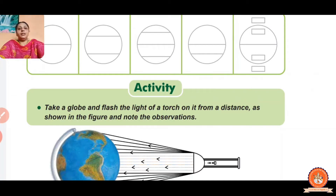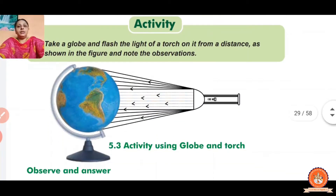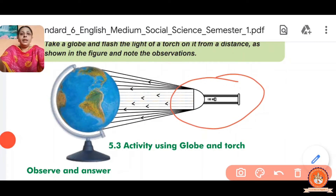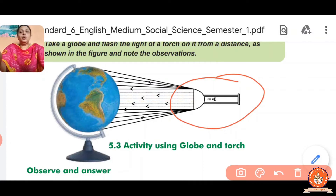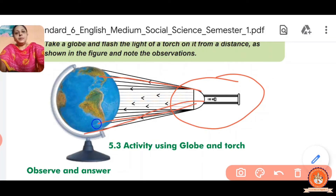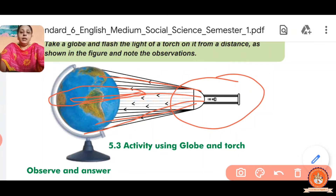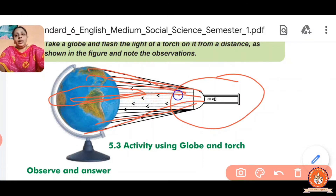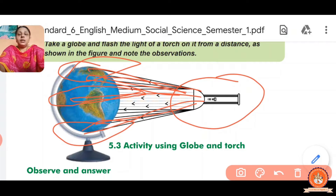Take a globe and flash the light of a torch on it from a distance, as shown in the figure, and note the observation. This torch light represents sunlight. The middle part directly receives sunlight — that is the equator — and it has too much heat. Where the light slightly reaches the Arctic Circle and Antarctic Circle, there is more coldness.